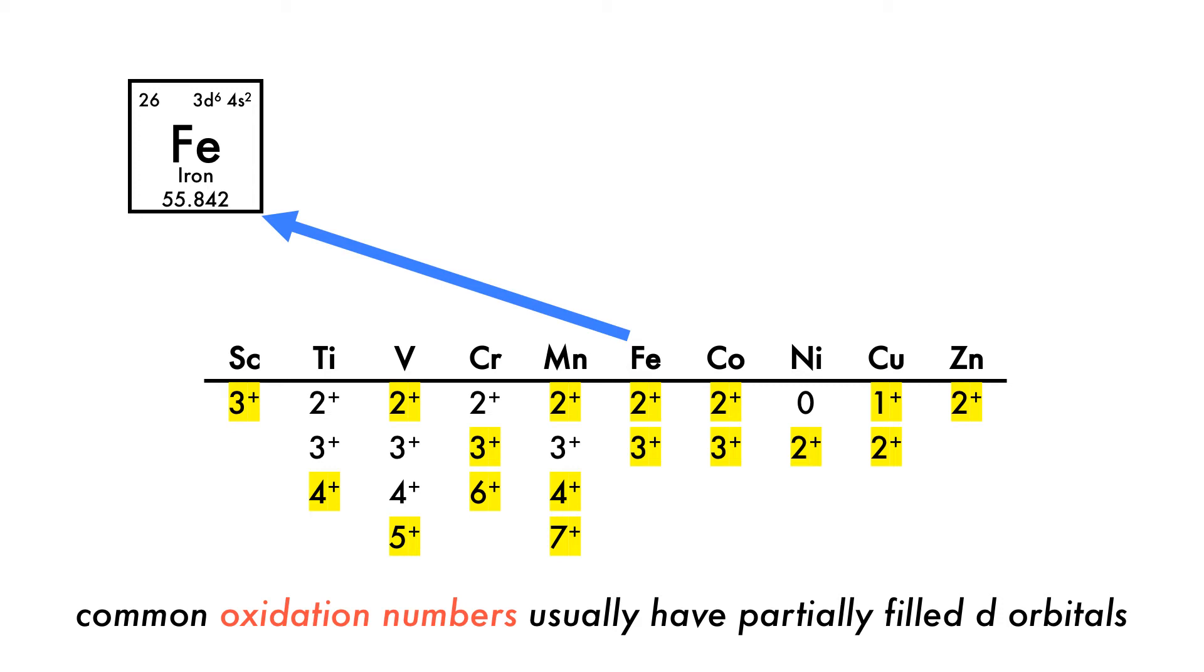In the case of iron, its electronic configuration first shifts from 3d6 4s2 to 3d8 before forming any ions. Its 3-plus oxidation state then includes five partially filled d orbitals, and in its 2-plus state, we have four partially filled orbitals.